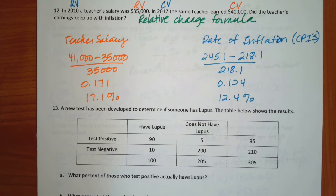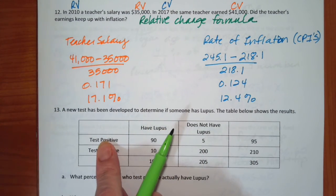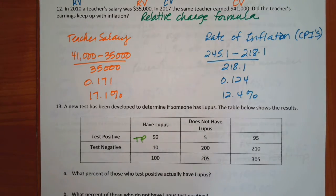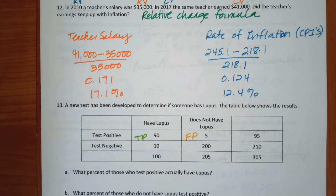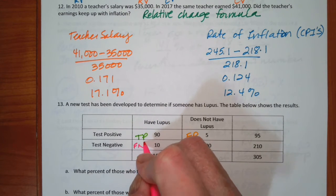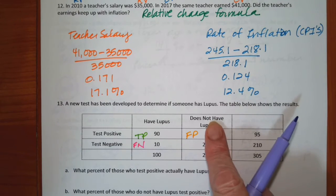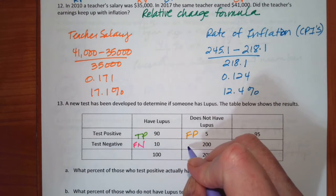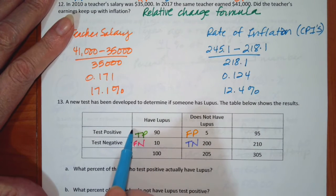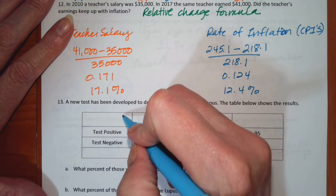If you have lupus and test positive, this is a true positive. If you do not have lupus but test positive, this is a false positive. If you have lupus and test negative, this is a false negative. If you do not have lupus and test negative, that is a true negative. On the diagonal, these are the accurate results.